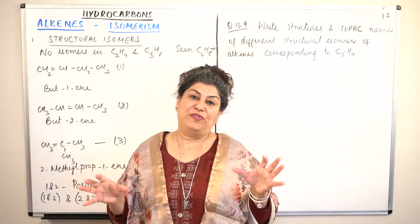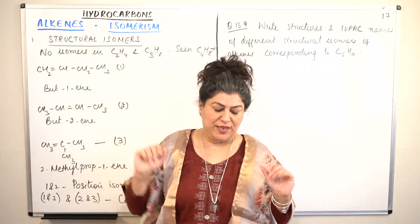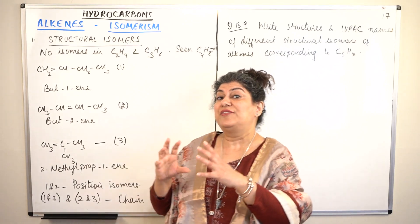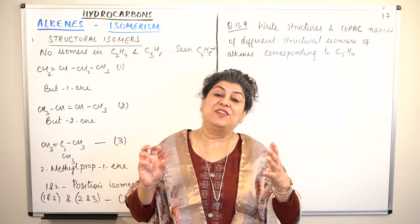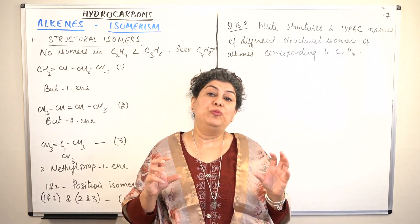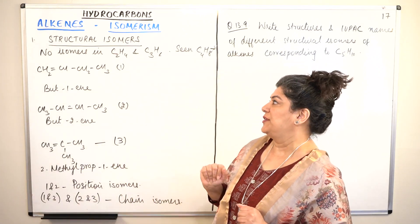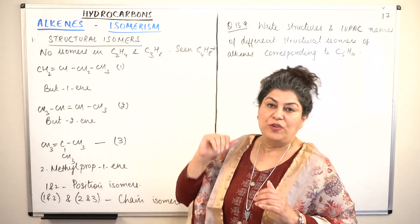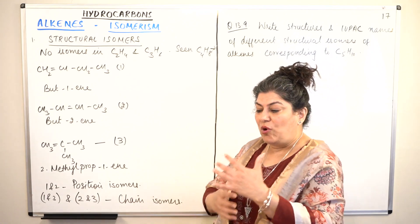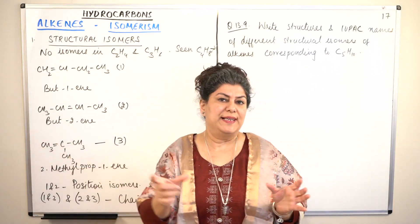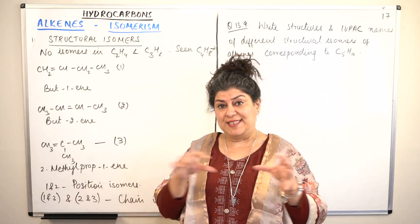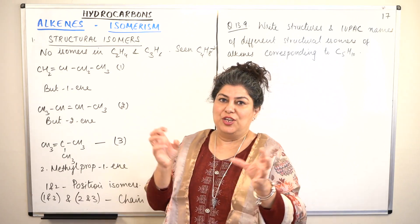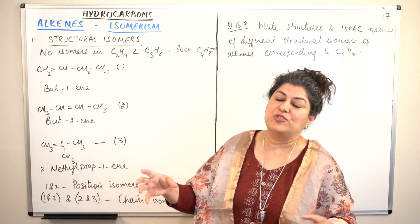When we talk of structural isomers, the structure of the molecule has to be different because of bonding. In geometrical isomers, the bonding is the same but the structure is different because of the orientation in space of the atoms or groups in the molecule. Structural isomers are formed if the carbon chain, the functional group, or the position of the double bond is at a different place — whether it's at some other position in the carbon chain, or if the chain is straight or branched.